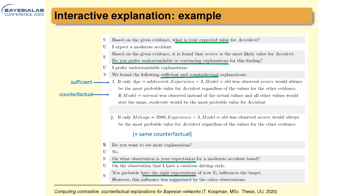The system asks if the user wants more explanation; the user says no. Then the reflecting part comes: the system asks, on what observation is your expectation for a moderate case? The user says: on the observation that I have a cautious driving style. The system replies: you probably have the right expectation about how that piece of evidence influences the outcome, but in this case it appears to be suppressed by the other observations.